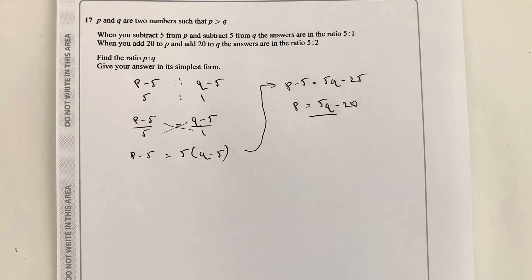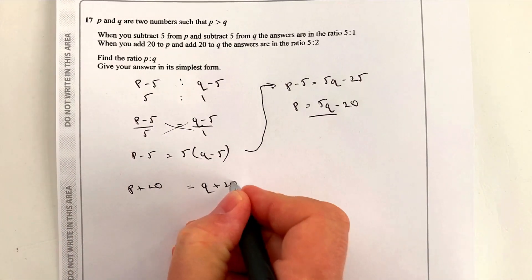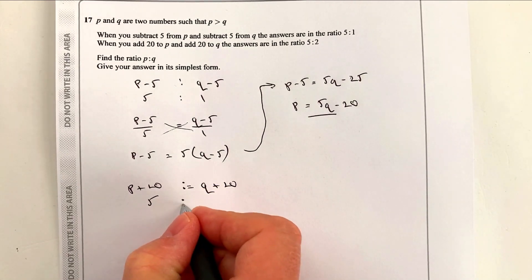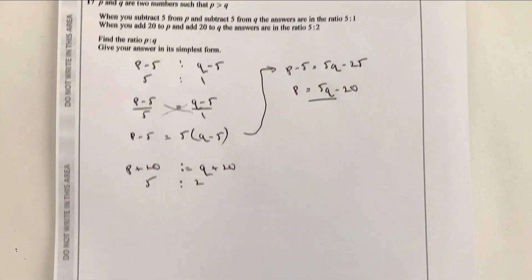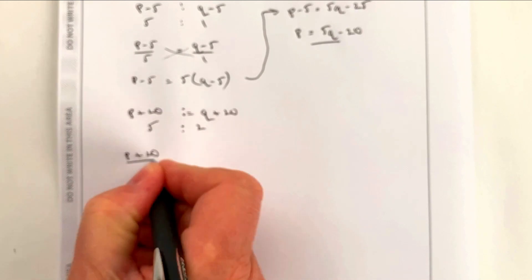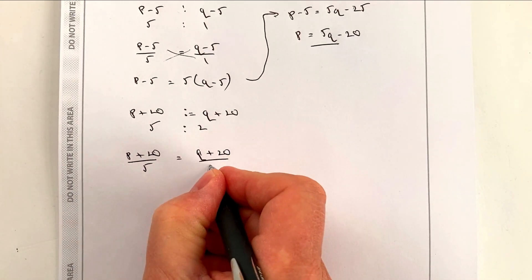So let's have a look at what I can do with that. I can now say if I expand those brackets, I've got P minus 5 equals 5Q minus 25. If I bring that minus 5 over to this side by adding it, what I end up with is a value of P which is 5Q minus 20. Now that's going to be important to me going forward. So my value of P is that. So let's have a look at what we could do next. The next line says when you add 20 to P and add 20 to Q, the answer is in the ratio 5 to 2. Maybe we can do a very similar exercise.